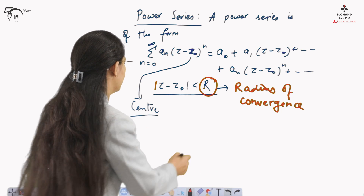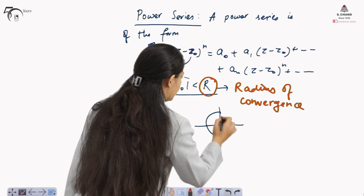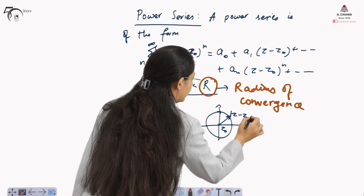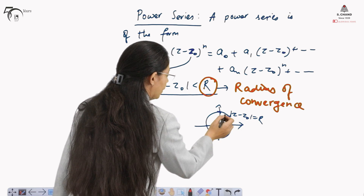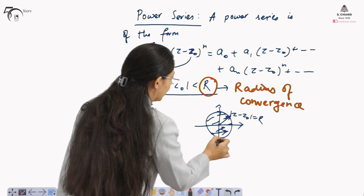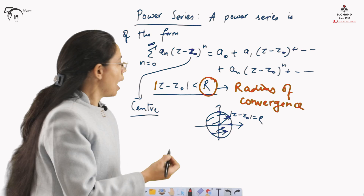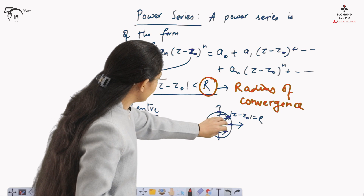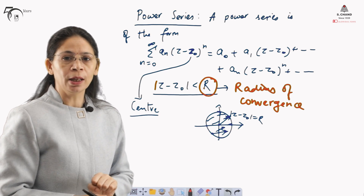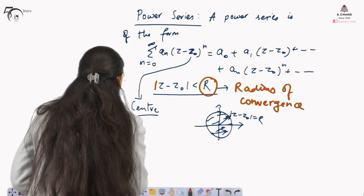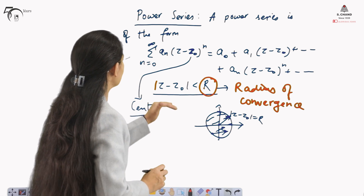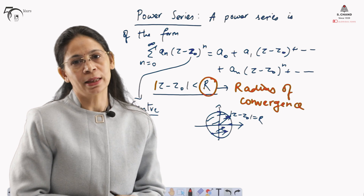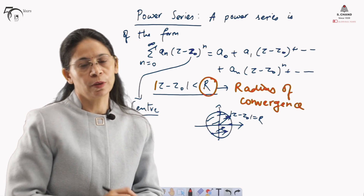We know that z₀ is the center point and r is the distance from it, so |z minus z₀| = r describes the boundary circle. If we consider only the interior then it is strictly less than r, and if equal then it includes the boundary as well. Inside this circle of radius r the power series is said to be convergent. If the power series is convergent for all z, then r is said to be infinity — that is, the radius of convergence is infinity.